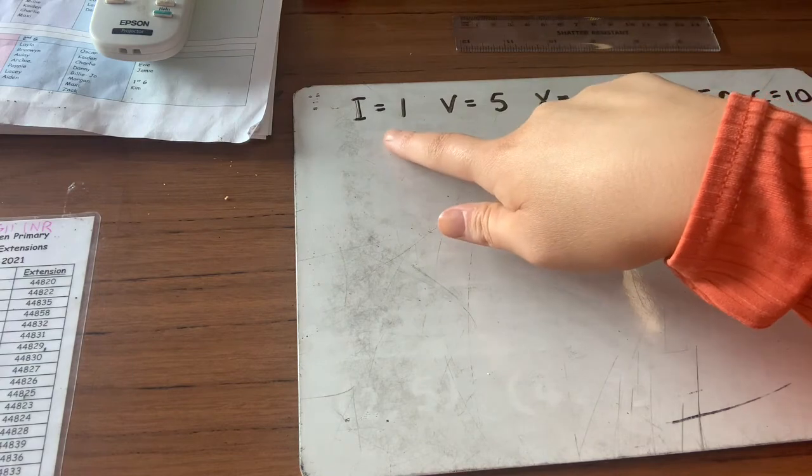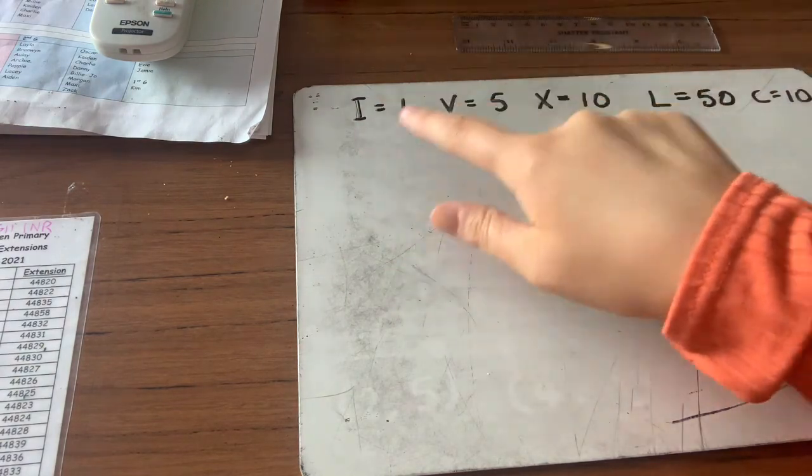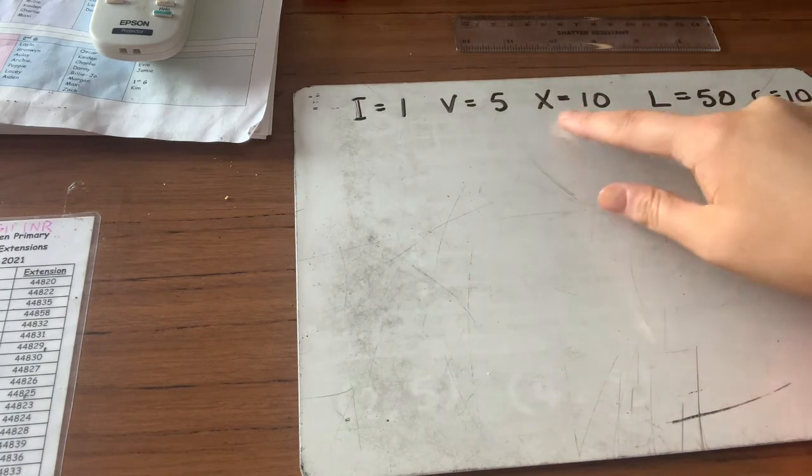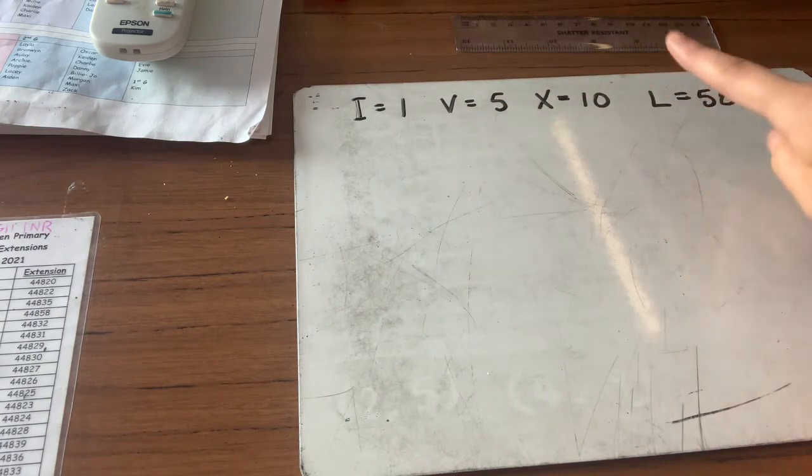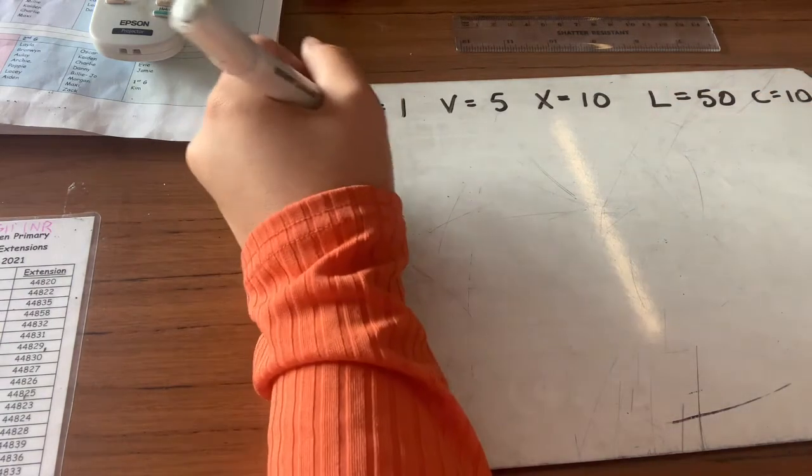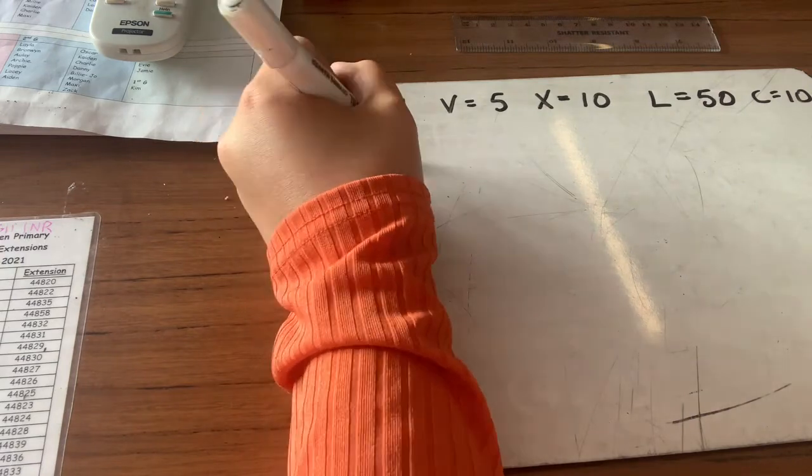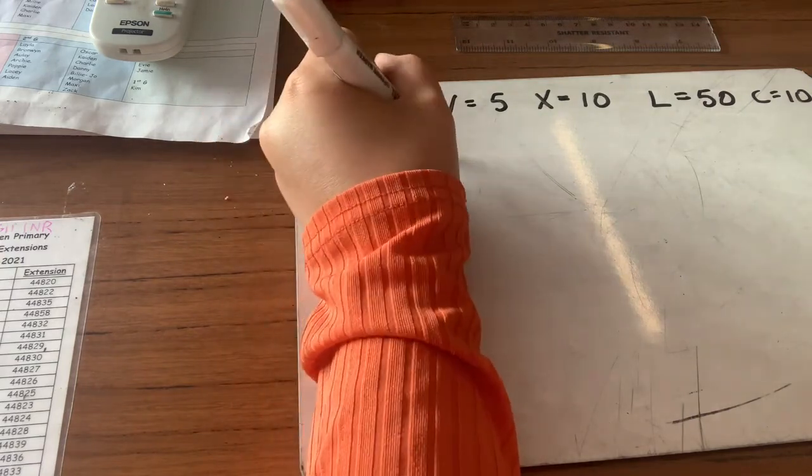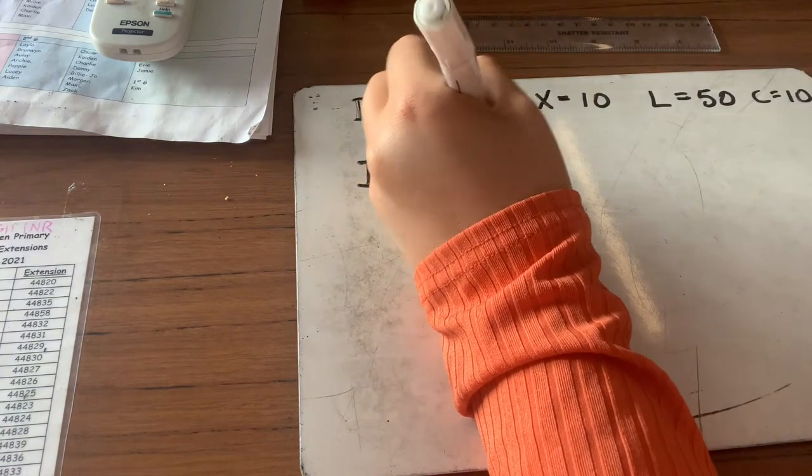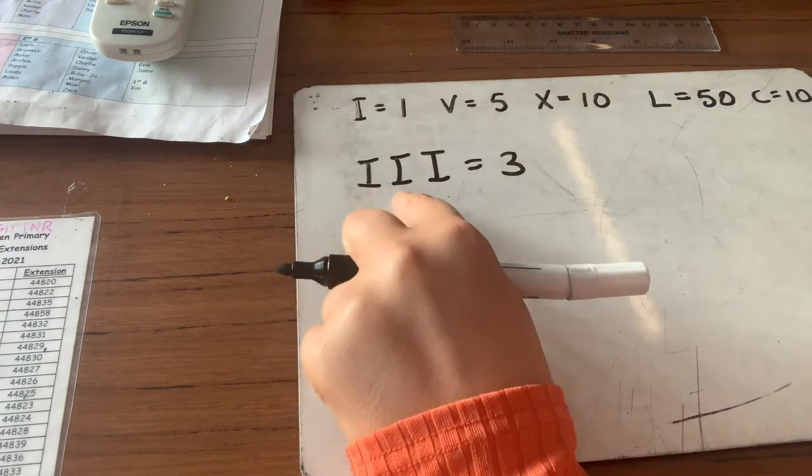So Roman numerals is an ancient way of writing down numbers. So I've put sort of the main low numbers up the top. So the letter I stands for 1, the letter V stands for 5, the letter X stands for 10, the letter L stands for 50, and the letter C stands for 100. So if I was to write down III like that, how many would that be worth? So that would be worth 3 because it's 1, 2, 3.